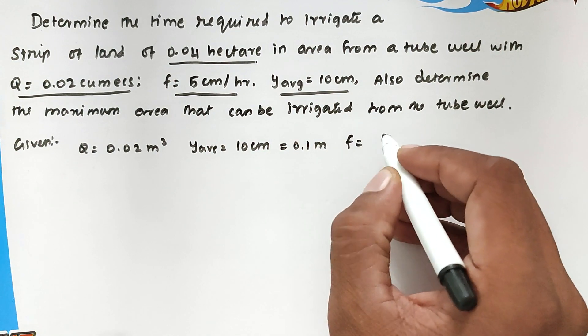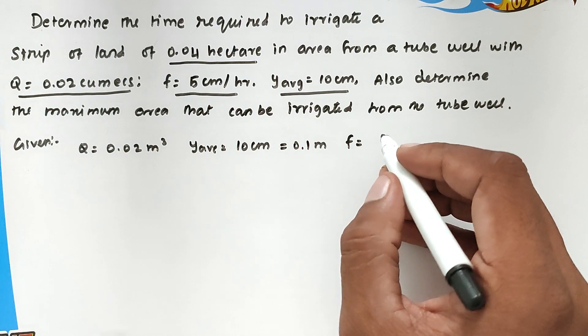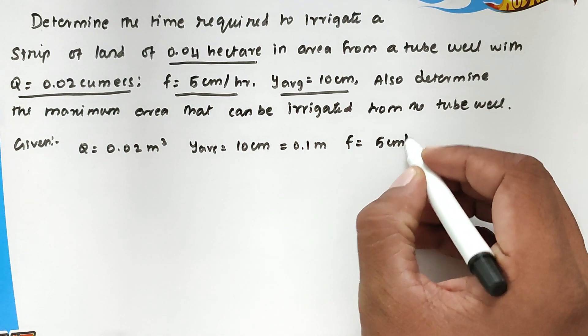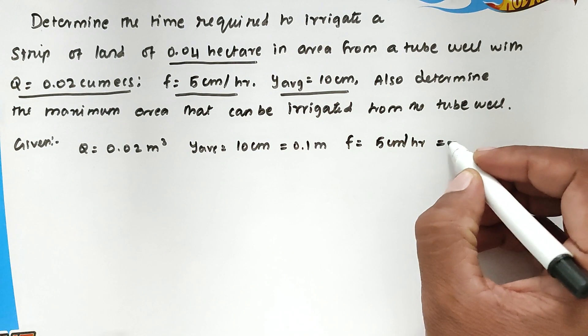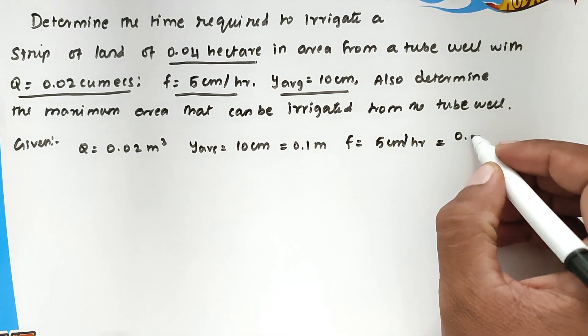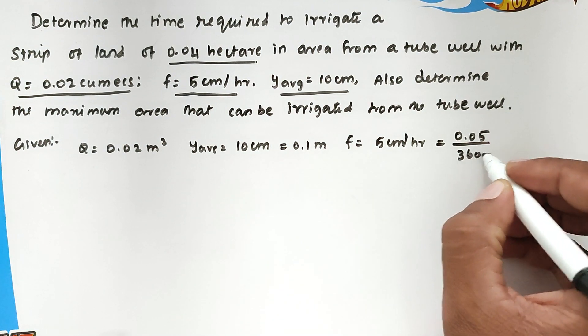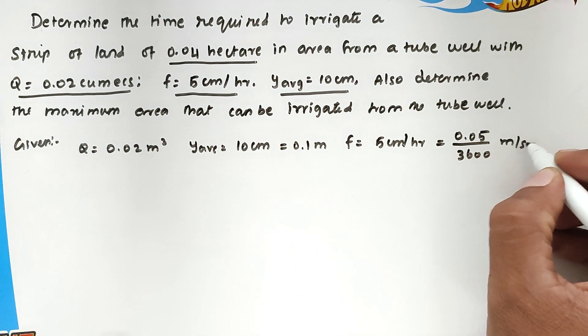Then F, that is infiltration rate of the soil, is 5 centimeter per hour. We can convert into meter per second, so 0.05 divided by 3600 meter per second.